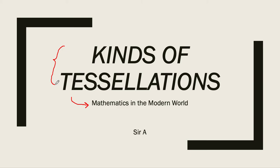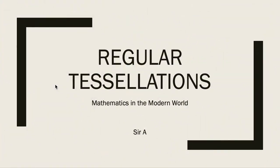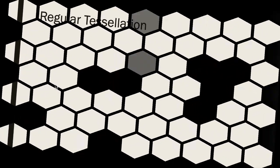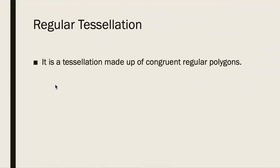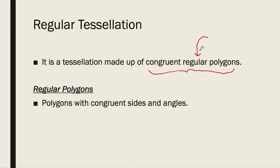We're going to start with regular tessellations. Regular tessellations are tessellations that are made up of congruent regular polygons. When you say regular polygons, the sides are equal and the angles are congruent. So a regular tessellation is made up of those repeating shapes of regular polygons — like a square, an equilateral triangle, and so on.